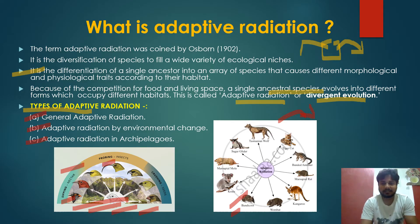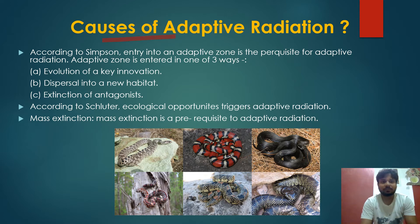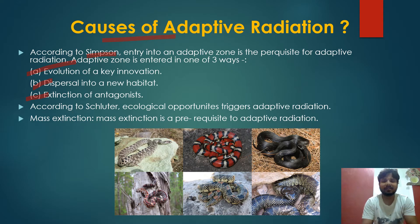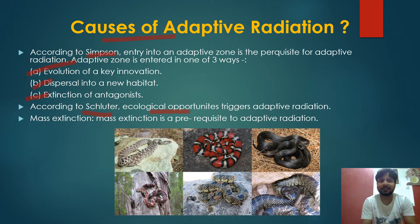According to Simpson, entry into an adaptive zone is the prerequisite for adaptive radiation. An adaptive zone is entered in one of three ways: evolution of a key innovation, dispersal into a new habitat, or extinction of antagonists. If an organism is in a new habitat or environment, it can adapt, and that adaptation eventually converts into evolution — forming a new species. Ecological opportunities trigger adaptive radiation.